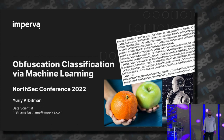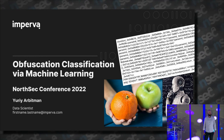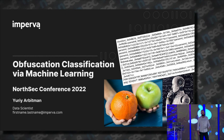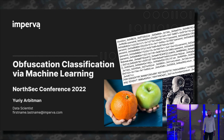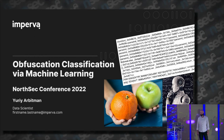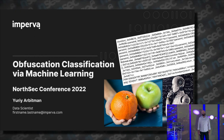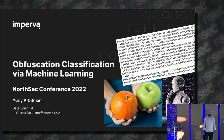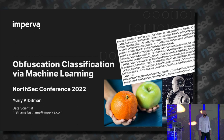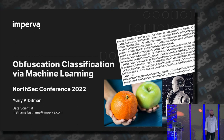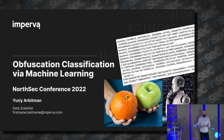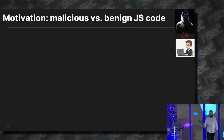We provide our customers a wealth of solutions like web application firewall, DDoS protection, client-side protection, account takeover prevention and more. Today I'm going to tell you about one of our recent projects that combines research in security and machine learning — classifying pieces of code into obfuscated and clear text ones. So let's start.